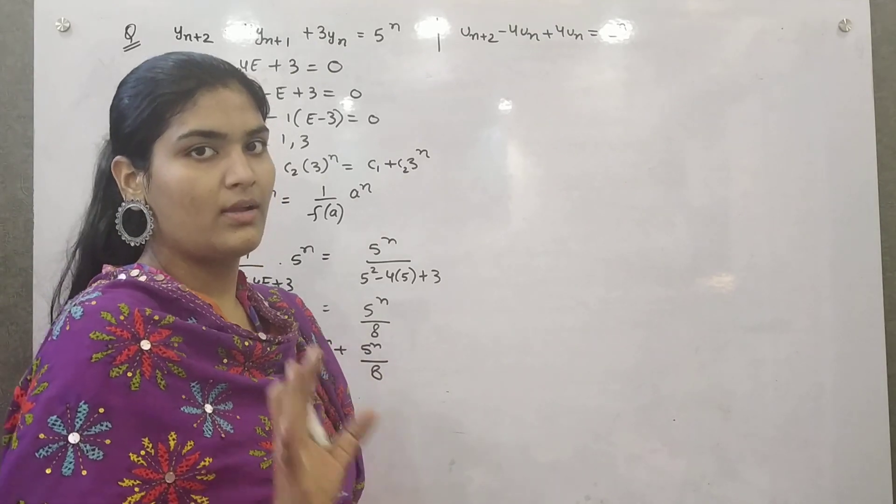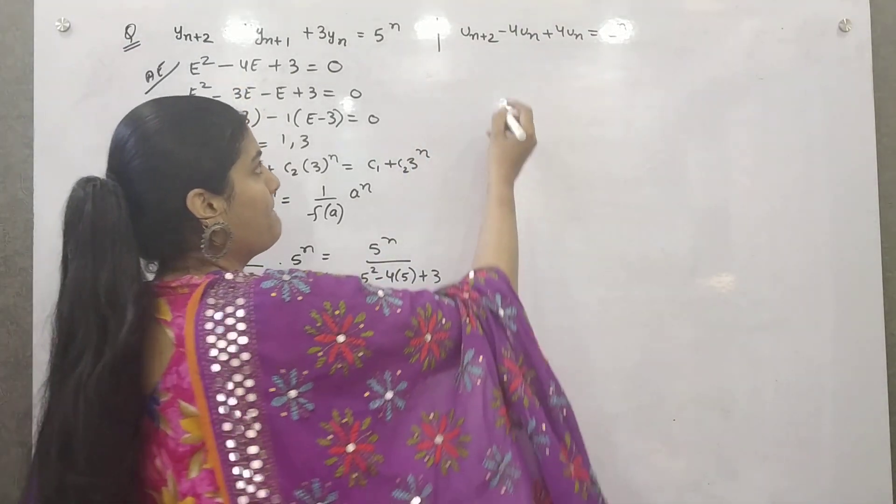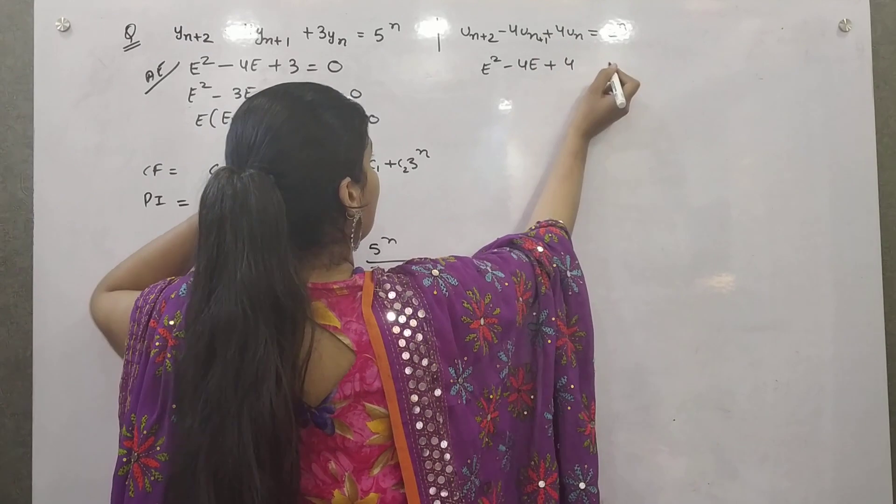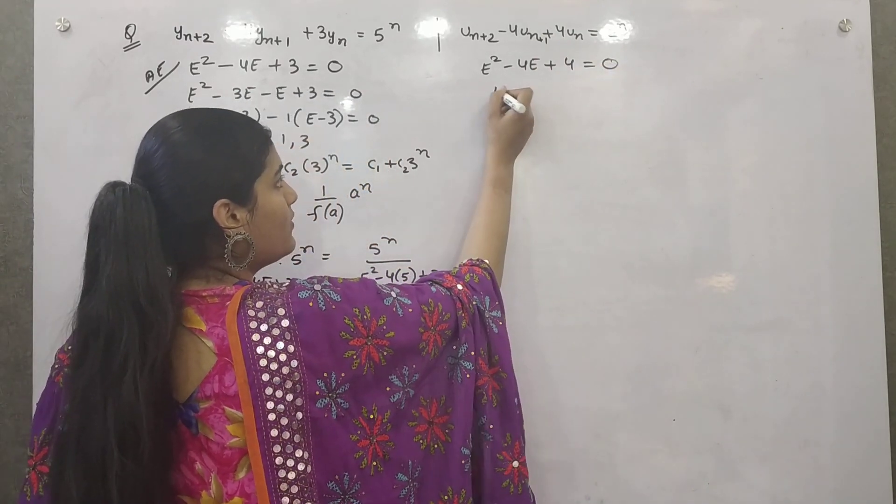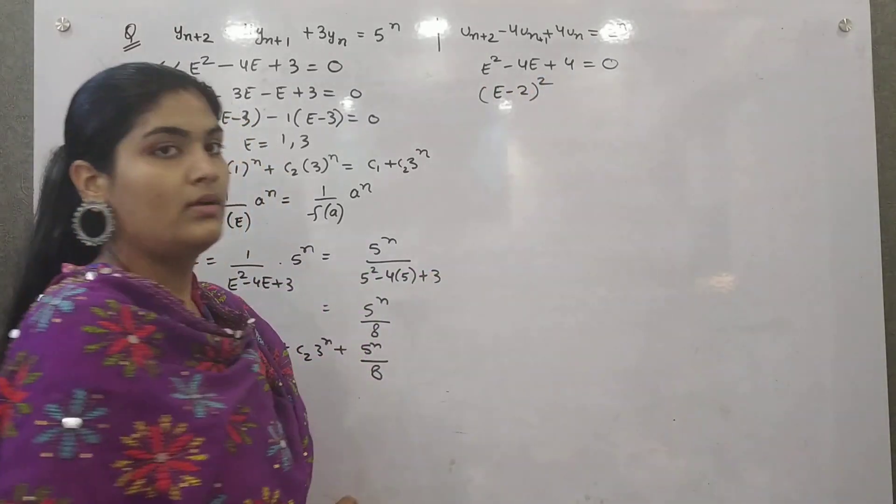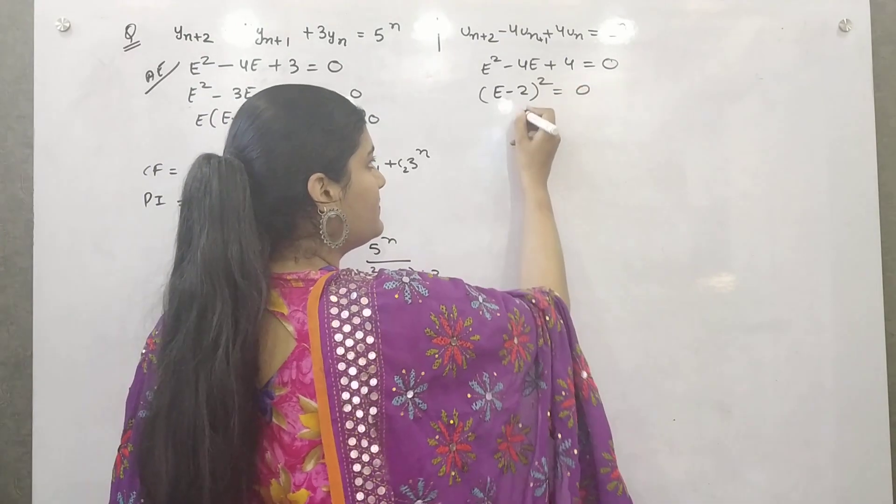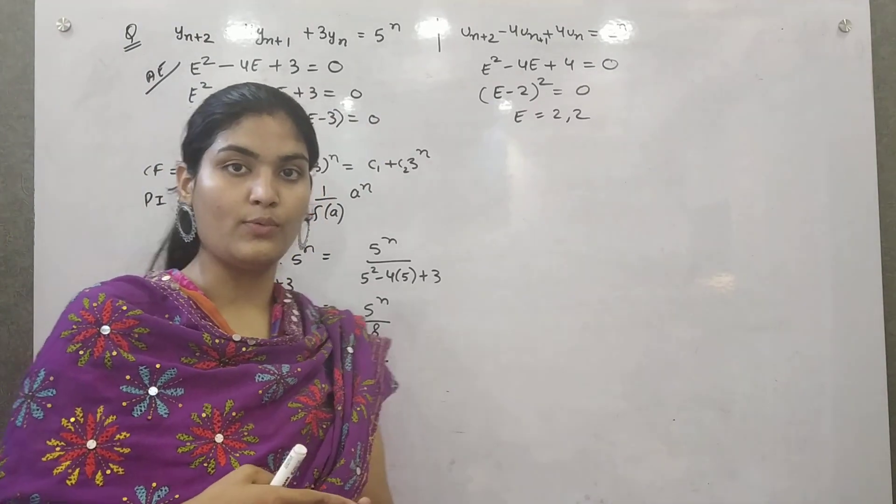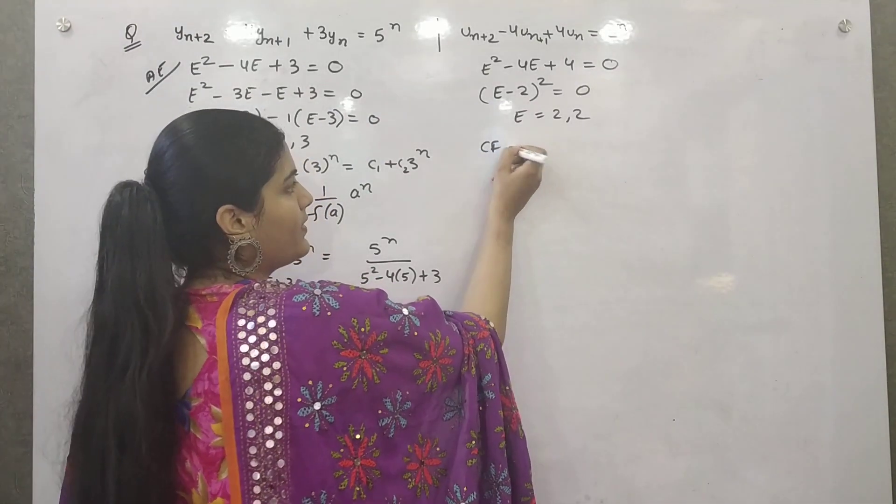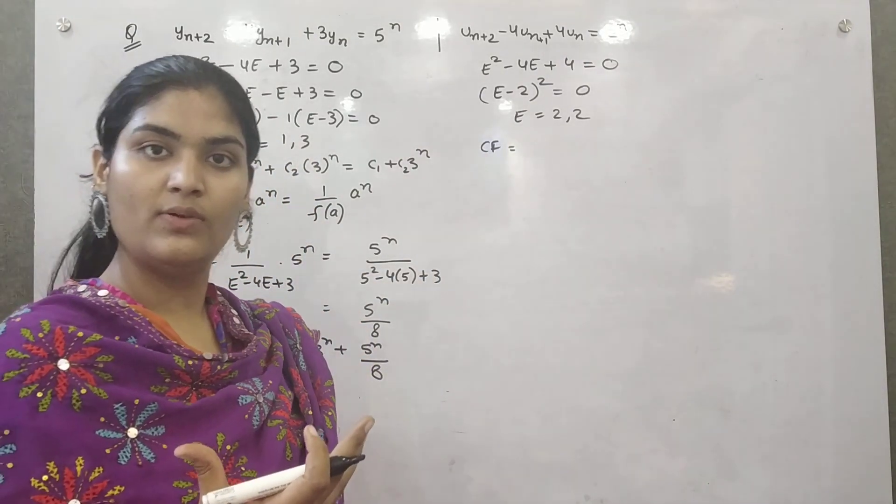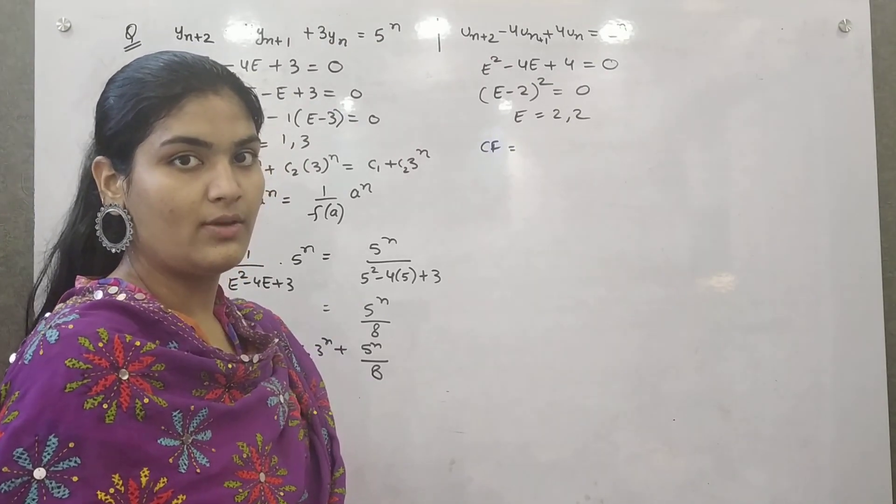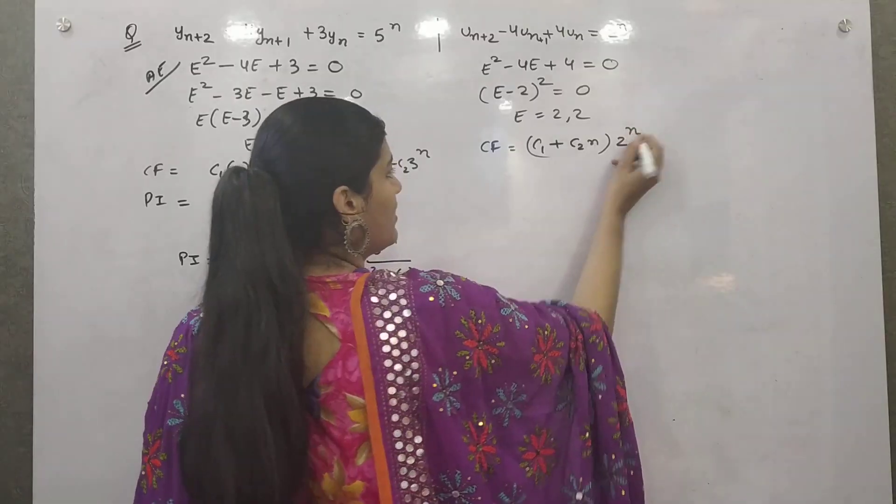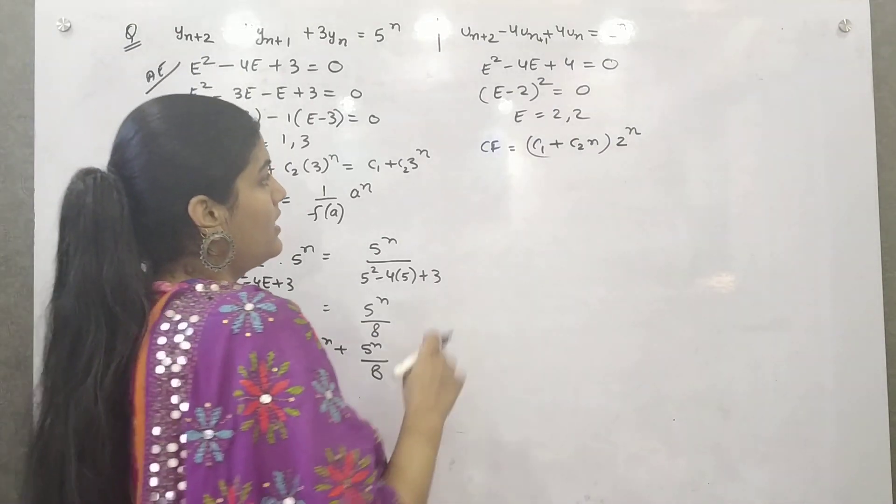But I'm not revealing what this is about yet. Let's solve this. e square minus 4e plus 4. This is n plus 1. Sorry about that. So equals 0. Now if you see, this is a perfect square of e minus 2, right? Now you have two real roots and equal roots. So what is the formula for complementary factor of equal roots? If you've seen my difference equation video, it's c1 plus c2n times the root raised to power n. This is your complementary factor.